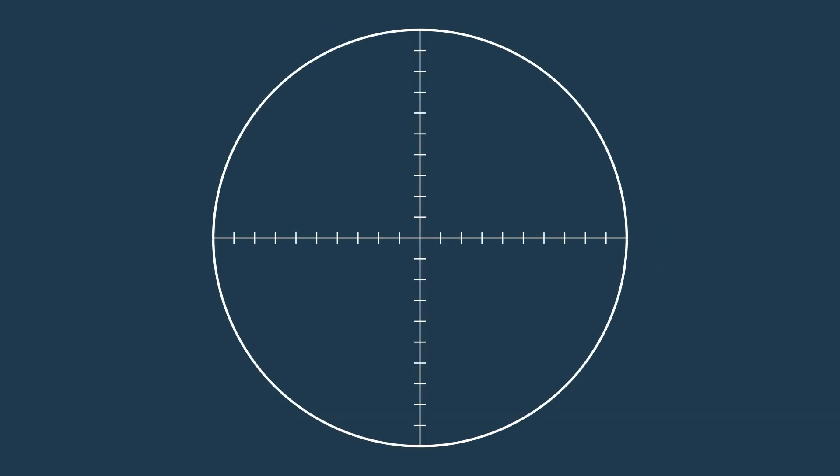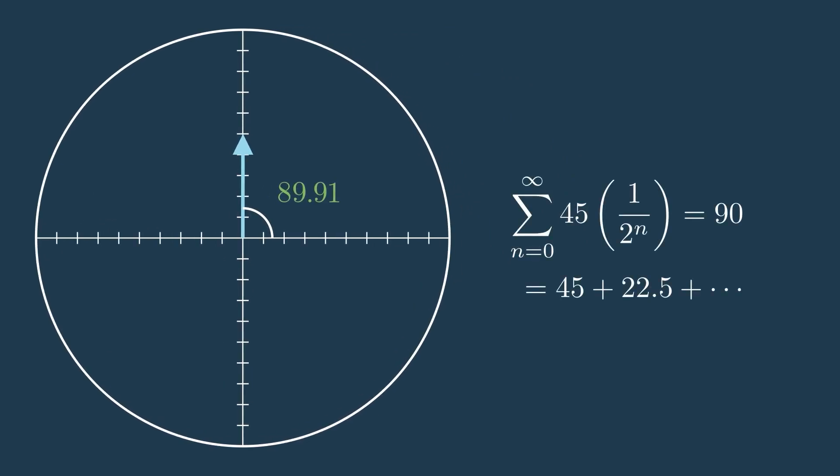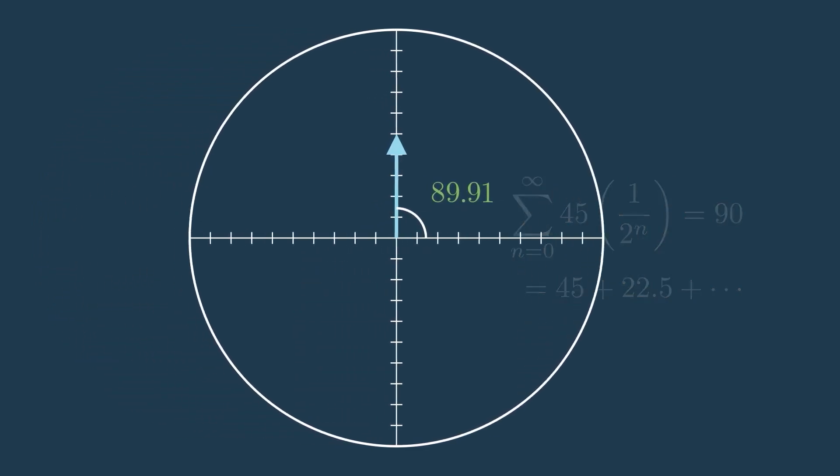Now if we take that example of walking on a line and apply it to the unit circle, we can rotate some vector by an angle of 45 degrees, then half of that, then half of that, and so on. This series can be represented as 45 times 1 over 2 to the n. And if we have infinite terms in that series, it'll eventually converge to 90 degrees. What that means is that we're able to reach any point in this first quadrant of the unit circle, or the first 90 degrees.